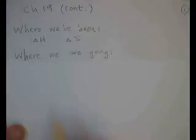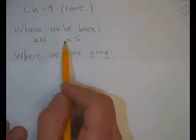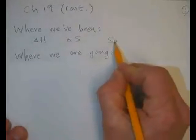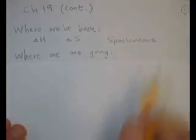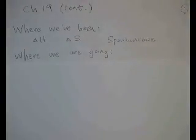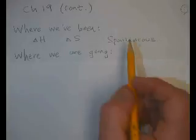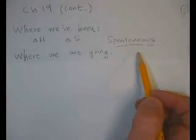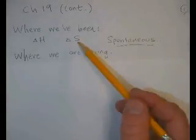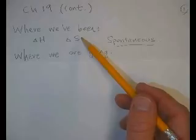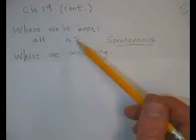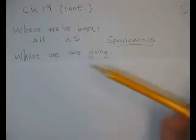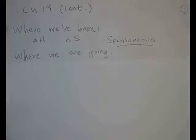We looked at both of those as causes for the spontaneity of a reaction. In this chapter, we're trying to answer the question: is something spontaneous or not? Mathematically, we're going to be able to calculate that. Just as you saw in the video cast before this, we looked at calculating delta H and delta S. And we're going to combine those two together today.